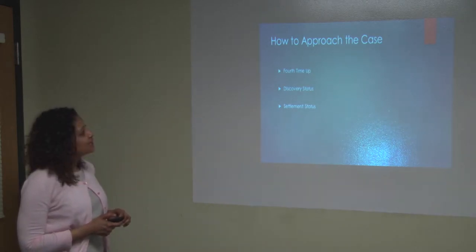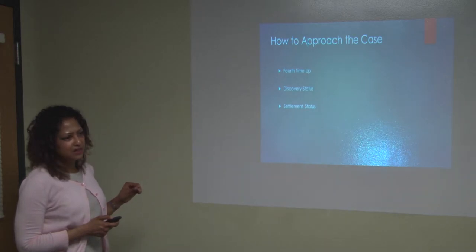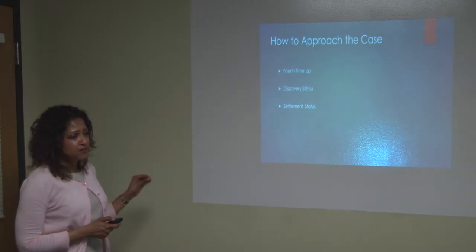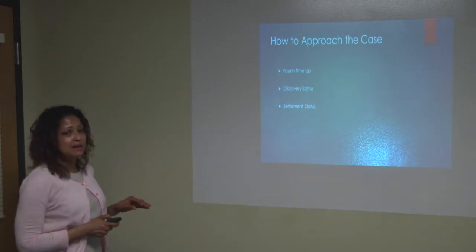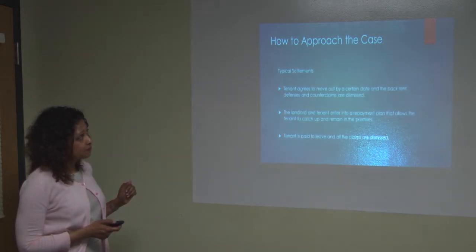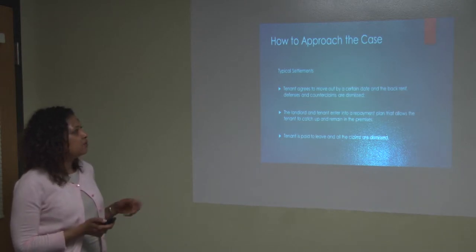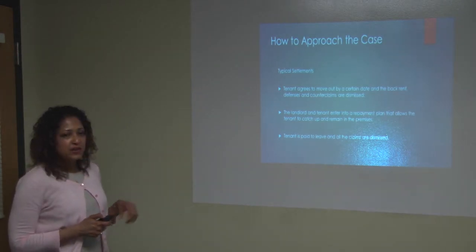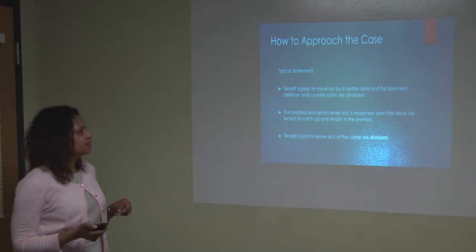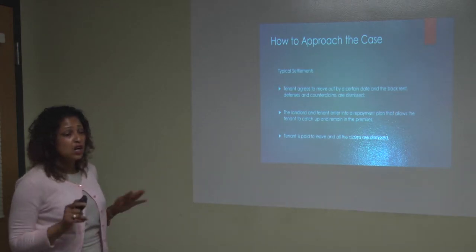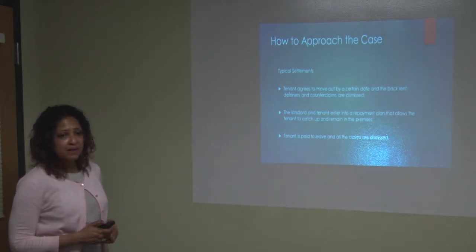By a fourth court appearance, there will typically be a discovery status and settlement status. Generally you don't get this many appearances in landlord-tenant — it's rare, usually reserved for cases with major counterclaims, sometimes commercial but rarely residential. By this point the parties have usually worked out some agreement. Typical settlements include the tenant agreeing to move out by a certain date in exchange for the landlord dismissing the money count — meaning they're no longer asking for back rent. Both parties also waive defenses and counterclaims. The complaint goes away, the counterclaims go away, the tenant vacates, and the landlord doesn't ask for money.